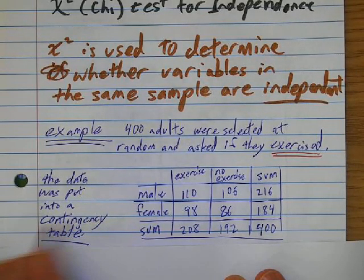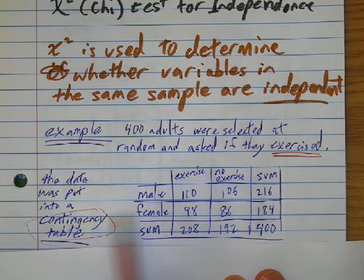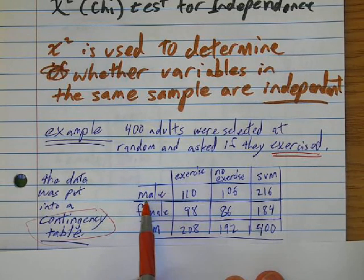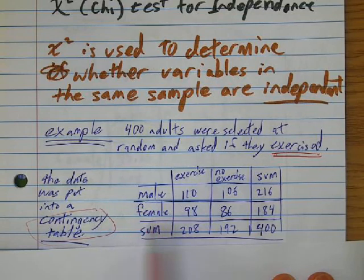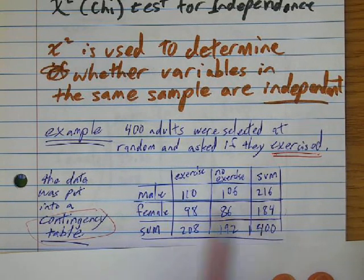And the contingency table basically says, okay, how many men were randomly asked? There was 216 of them. How many females were randomly asked? 184. This is how many.